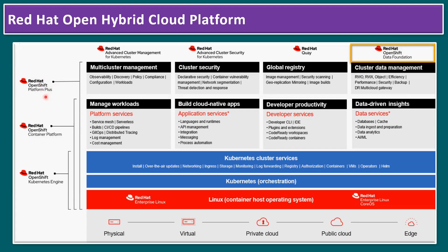ODF is part of the OpenShift Platform Plus license with Essential Edition at no additional cost. If we're planning to utilize ODF advanced features, we require an ODF Advanced license. It is a software-defined storage solution — we can also call it a hyper-converged infrastructure solution, HCI. Similar to VMware vSAN and Nutanix HCI, we have Red Hat ODF. The new thing with ODF is it supports file storage, block storage, and object storage — all three features.